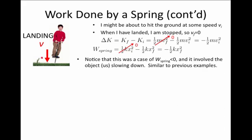This is a case where the work done by the spring is less than zero. And notice, looking at the change in kinetic energy, it is also a case where the object, we, are slowing down. This is similar to previous examples, where we found that a negative work results in a reduction in speed.